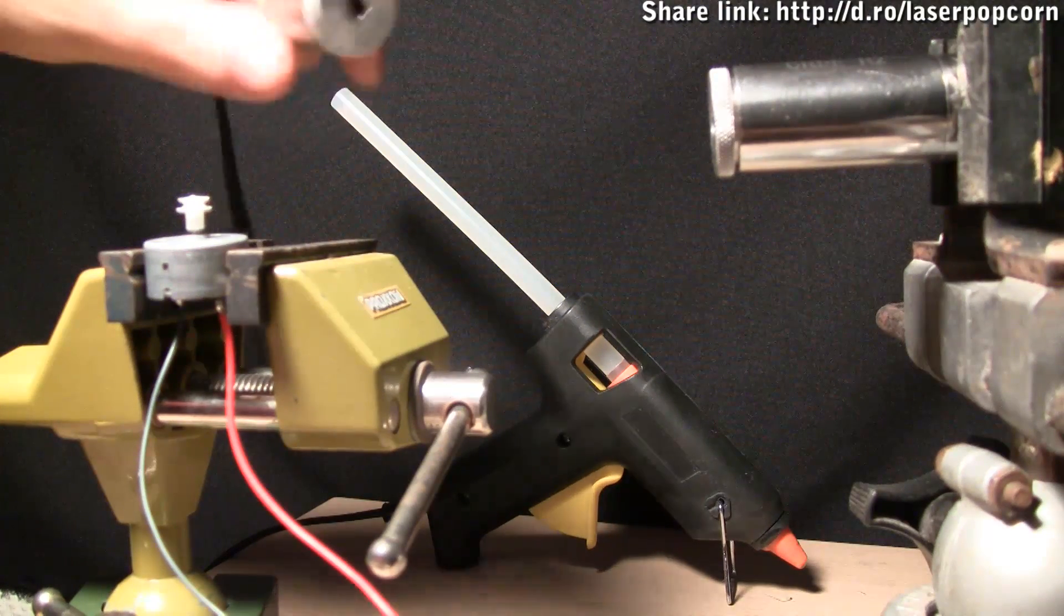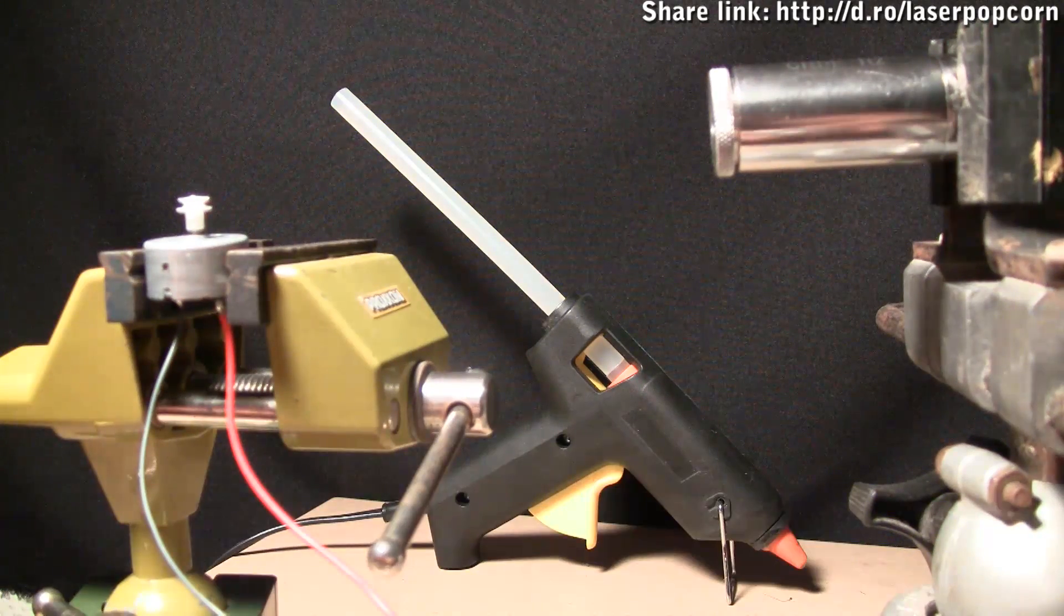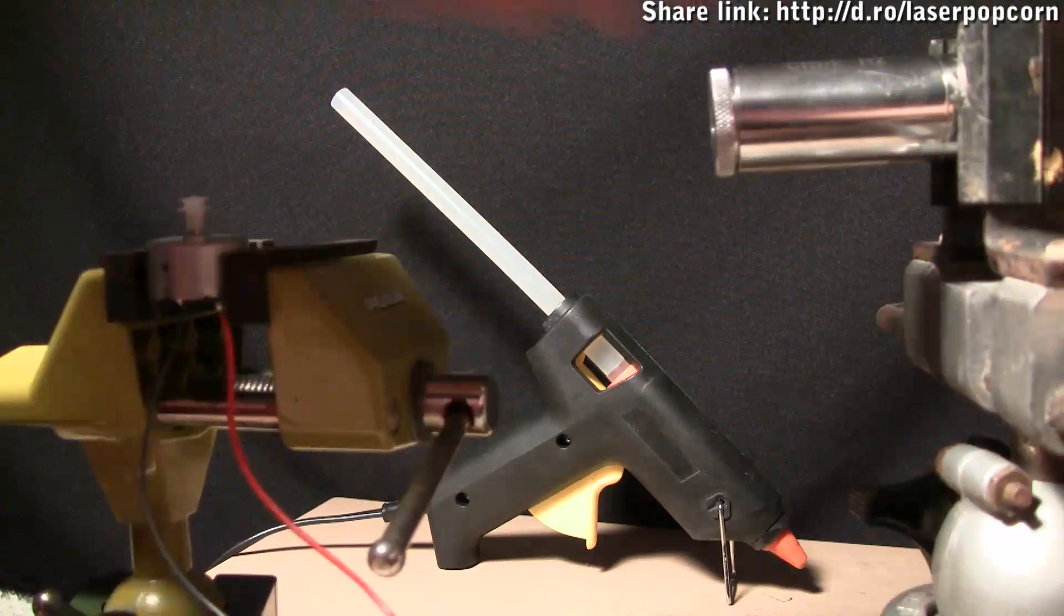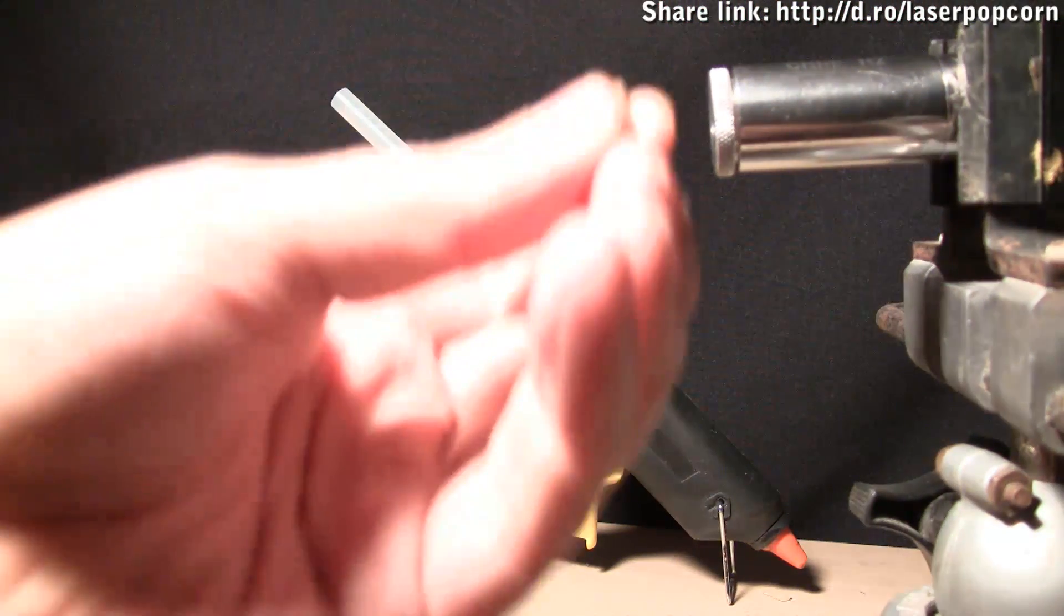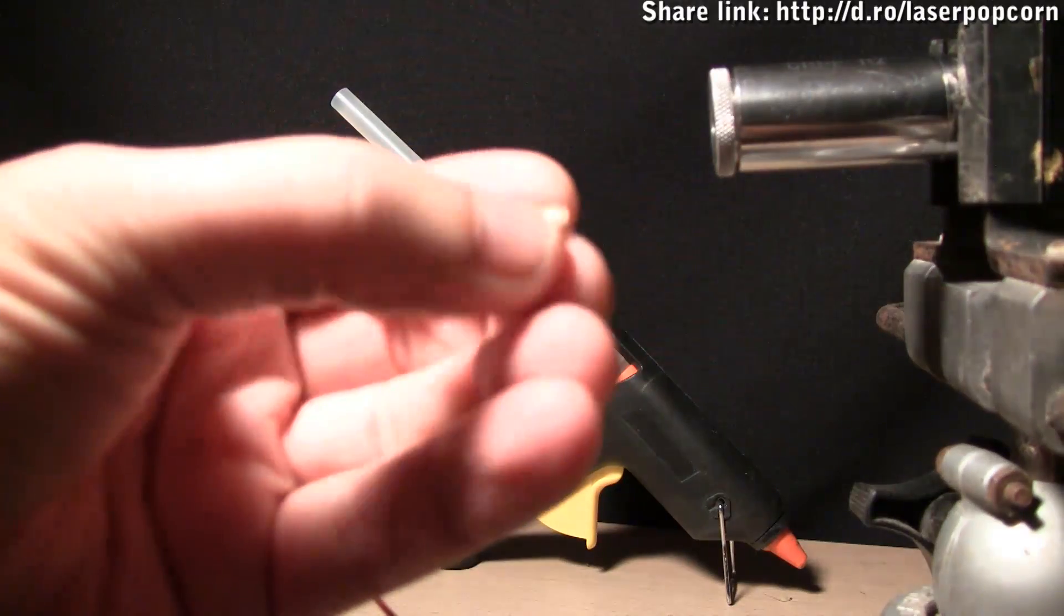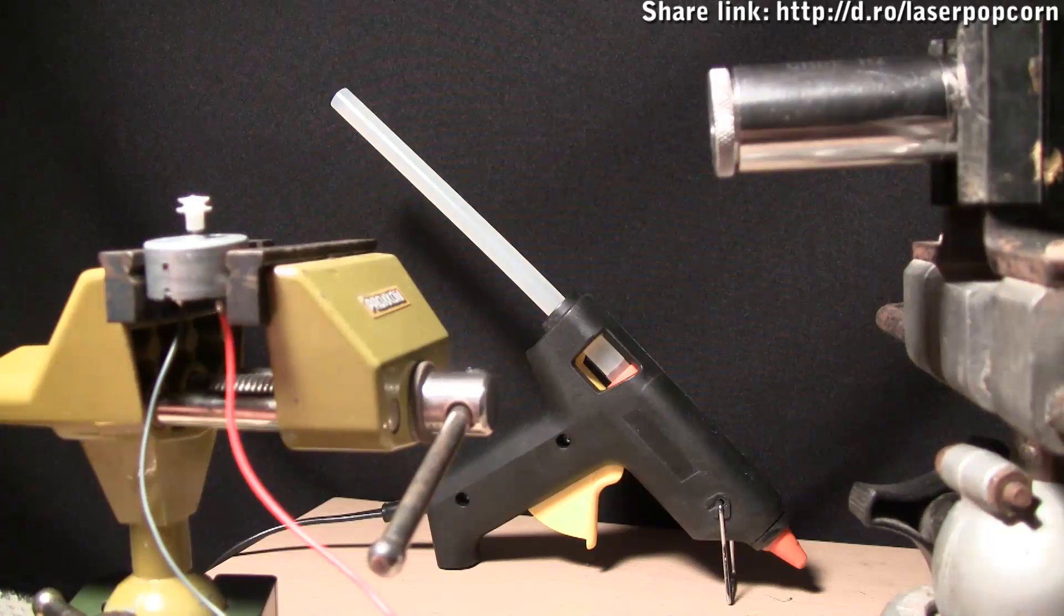I'll be using two pocket 1-watt blue lasers: this one in my hand, and this one positioned in a vise. These will be trained on this kernel of corn. In order for the heat of the laser light to be properly distributed in the kernel, it will need to be spun.